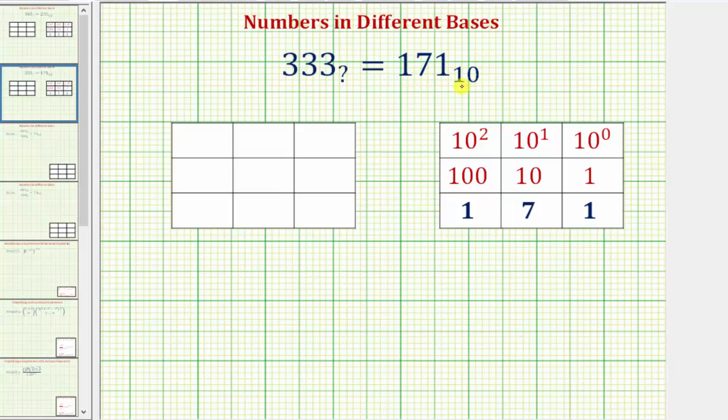Remember for base 10, the place values are based upon powers of 10. So this one is in the ones place value because 10 to the zero equals one. The seven is in the tens place value because 10 to the first equals 10. And the one on the left is in the hundreds place value because 10 squared equals 100.